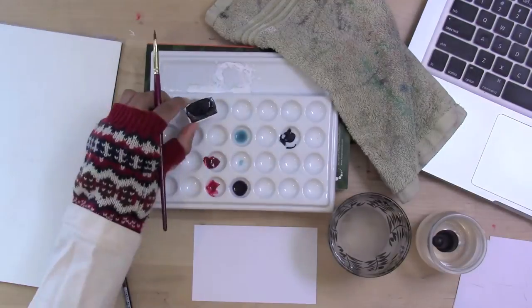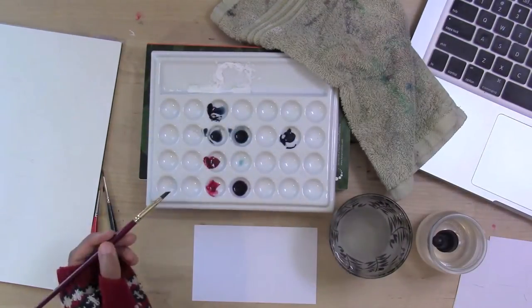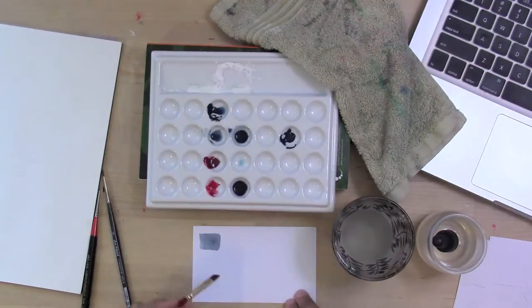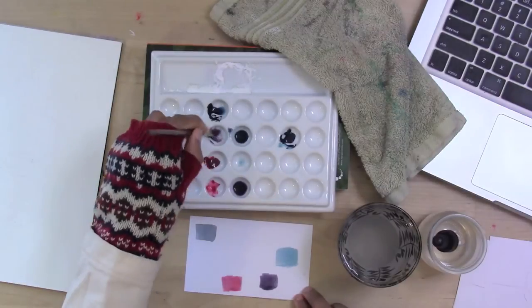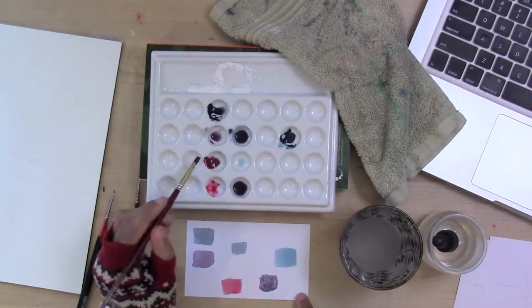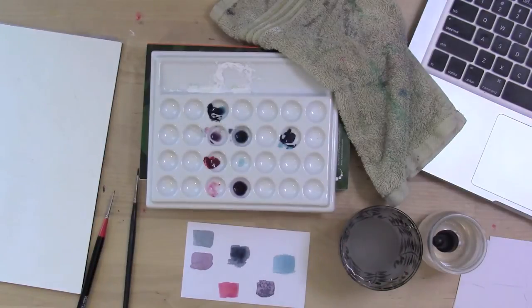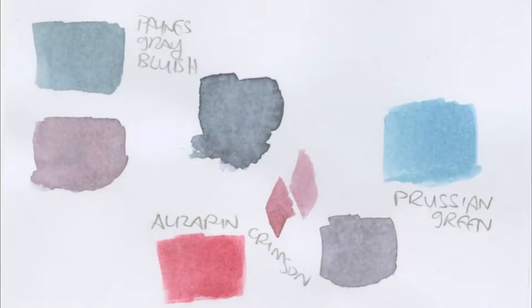I'm pulling out these colors and you'll notice that again I'm using a limited palette. This time it's Payne's Gray Bluish, Prussian Green, and Alizarin Crimson. The Prussian Green is only slightly more green than the Payne's Gray Bluish, which is on the left, and the Alizarin Crimson is down there on the bottom of the index card and the Prussian Green is on the right.